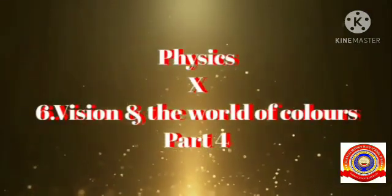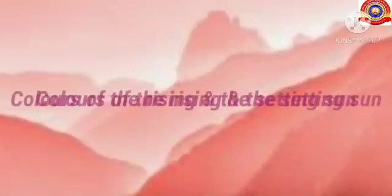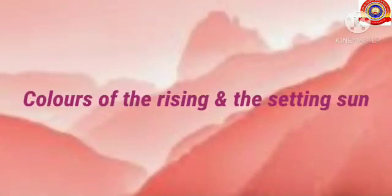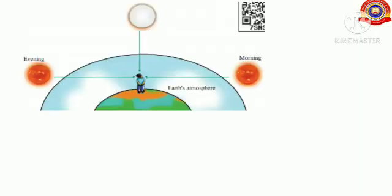Hello, my dear friends. Welcome back. Today we are going to learn about the colors of the rising and the setting Sun, related to the previously studied topic of scattering. Let's start the topic with this figure. Here you can see the Earth's atmosphere and the positions of the Sun.